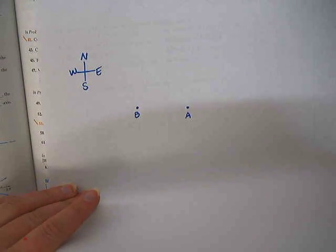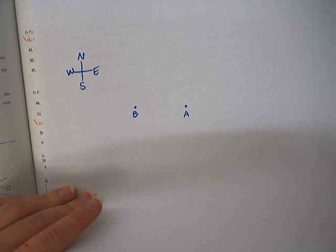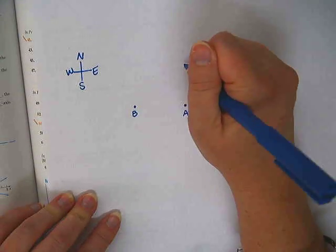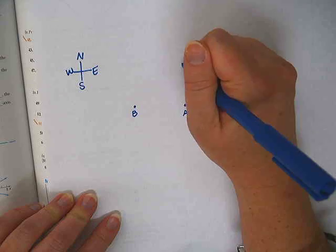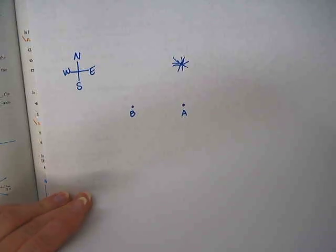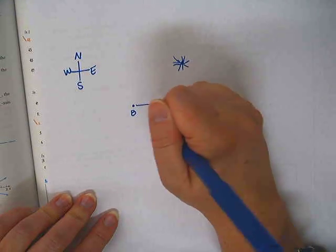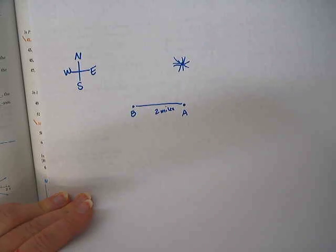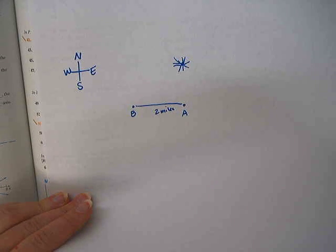So person B is west of person A, and the display is known to occur directly north of person A. Okay, so there's the fireworks right there. Okay, so this is two miles from each other.